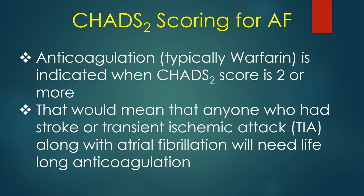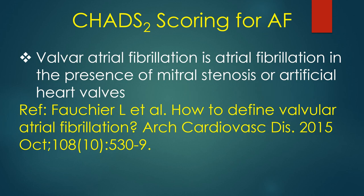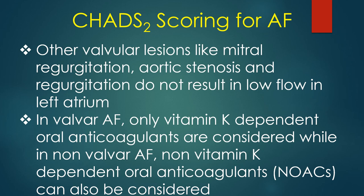Anyone who has had a stroke or TIA along with atrial fibrillation will need lifelong anticoagulation. As age above 75 is a risk factor, any one of hypertension, diabetes mellitus, or congestive heart failure in this age group becomes an indication for anticoagulation in the presence of AF. Valvar atrial fibrillation refers to AF in the presence of mitral stenosis or artificial heart valves — in valvar AF, only vitamin K-dependent oral anticoagulants are considered, while in non-valvar AF, non-vitamin K-dependent oral anticoagulants can also be used.